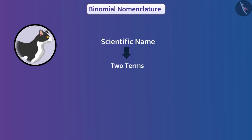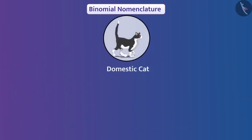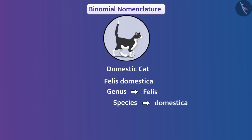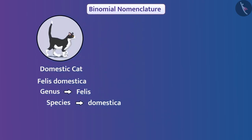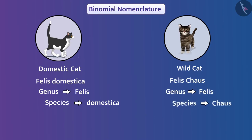The scientific name has two terms, which are words of the Latin language. The first word denotes the genus of the organism and the second word denotes the species. For example, a domestic cat has the scientific name Felis domestica, meaning it belongs to genus Felis and species domestica. Similarly, the wild cat has the name Felis chaus, in which Felis is the genus and chaus is the species.